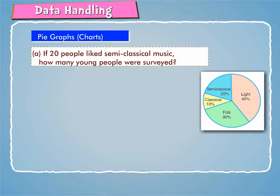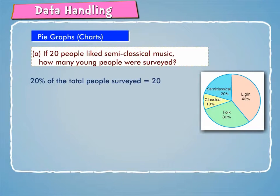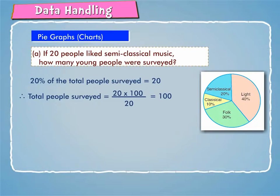If 20 people liked semi-classical music, how many young people were surveyed? 20% of the total people surveyed is equal to 20. Therefore, total people surveyed is equal to 20 × 100 / 20, which equals 100.